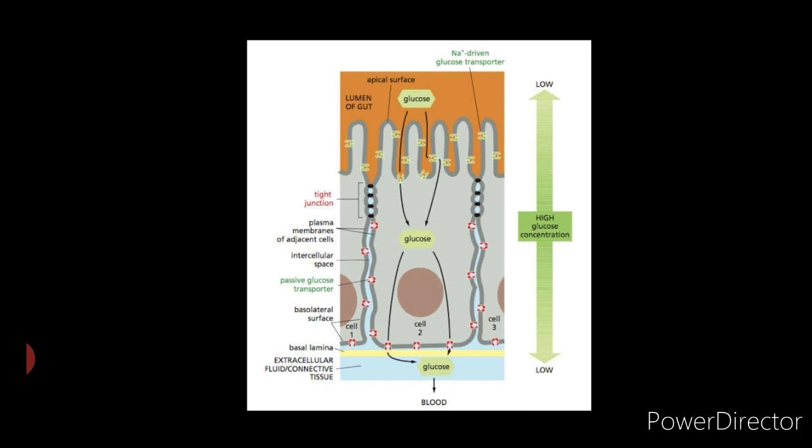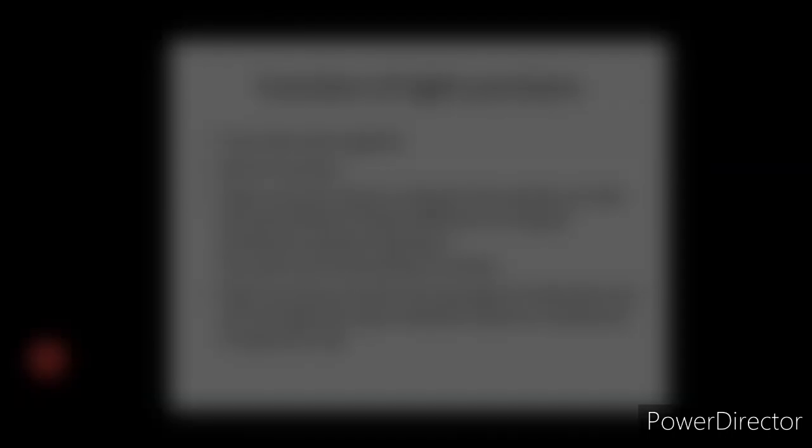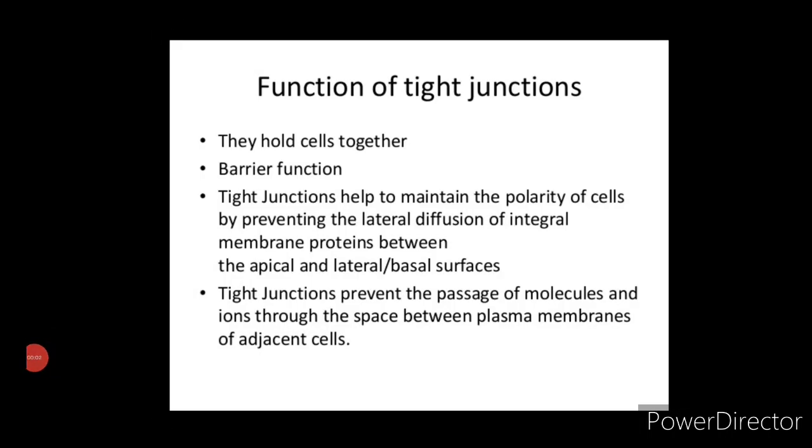Now let us understand the functions of tight junctions. Tight junctions have four very important functions. First, tight junctions prevent diffusion of macromolecules and, to varying degrees, impede the diffusion of small water-soluble molecules and ions across an epithelial sheet in the space between cells.